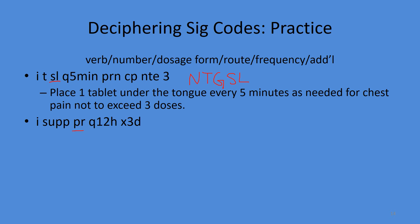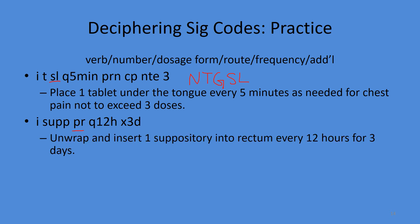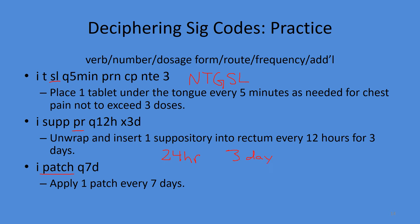For a rectal suppository, many dosage forms can go into the rectum. Don't forget to tell the patient to unwrap. Translation: unwrap and insert one suppository into the rectum every 12 hours for three days. For a patch — a topical dosage form — the verb is 'apply.' Translation: apply one patch every seven days. Patches can be 24-hour, three-day, or up to seven-day patches.